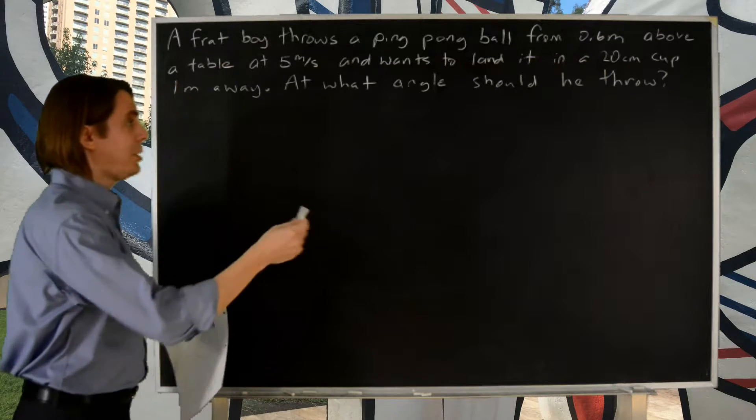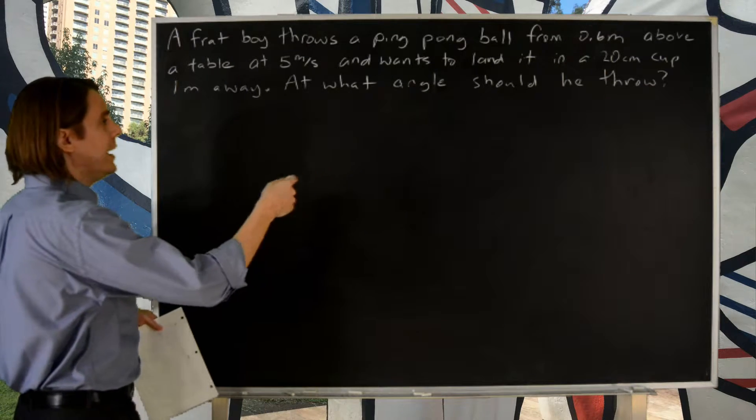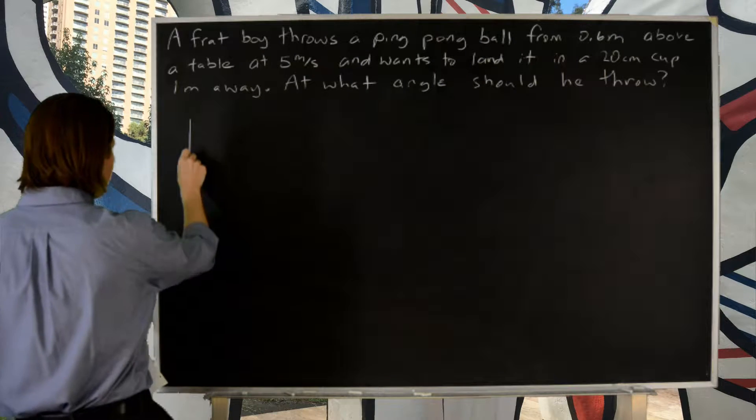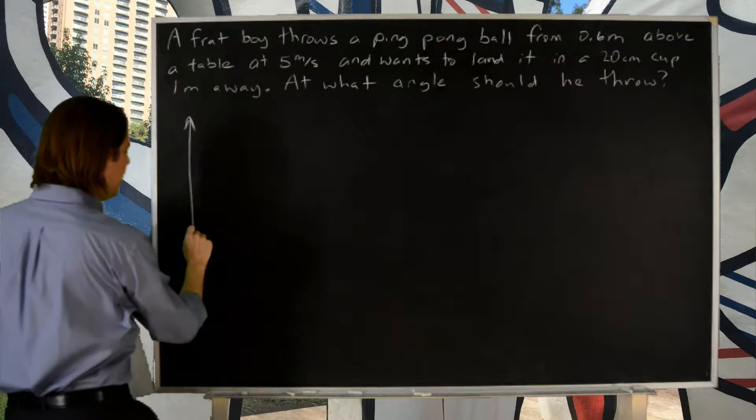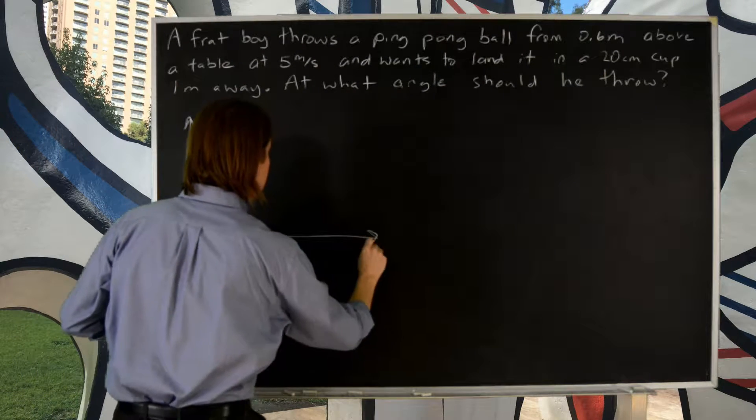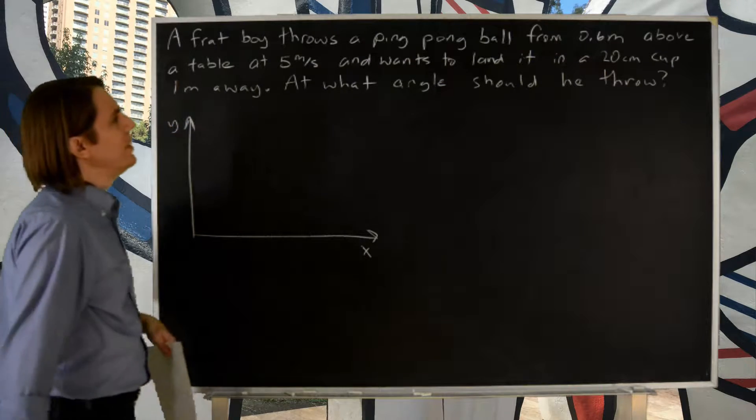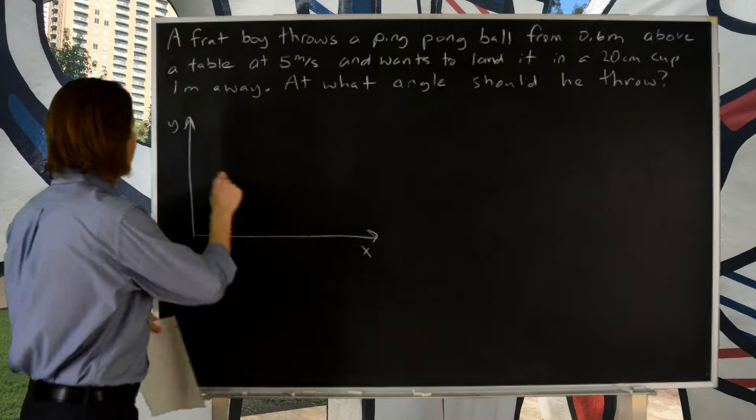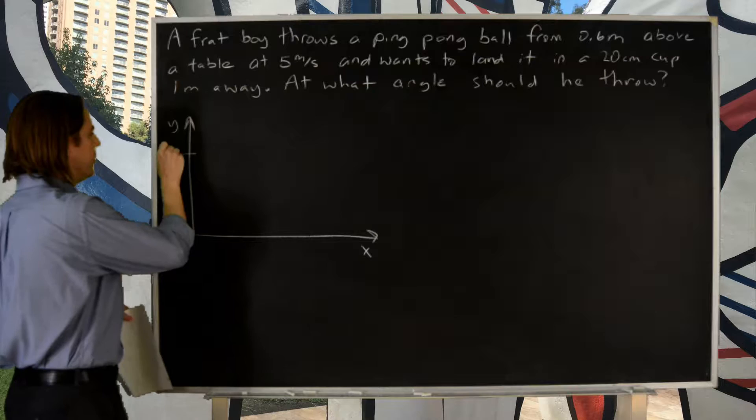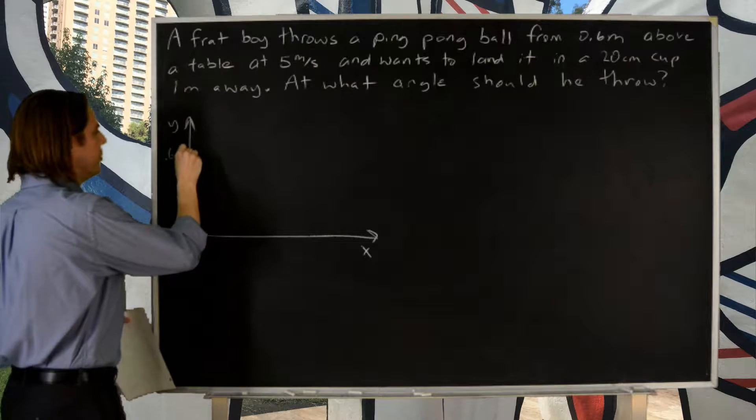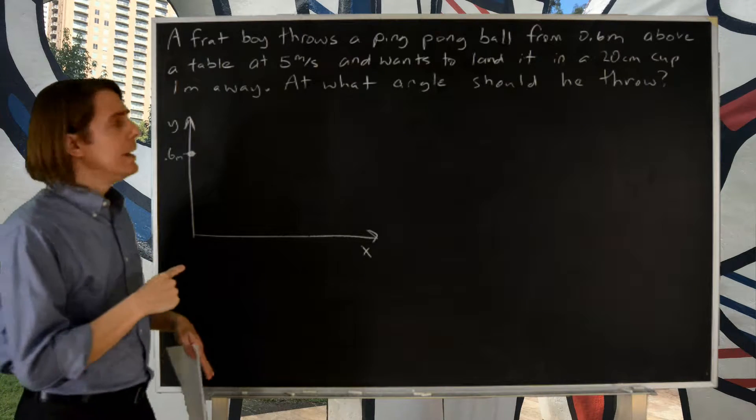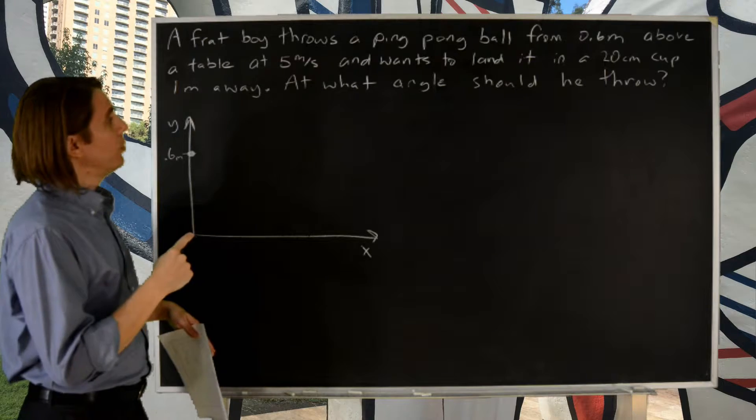Now we have a frat boy throwing a ping pong ball into a cup. Let's see, we'll draw this one with actual axes - y vertical, x horizontal. It looks like the frat boy is throwing from 0.6 meters because frat boys are tall and everything.